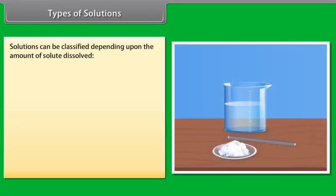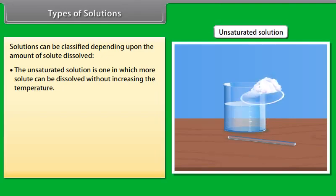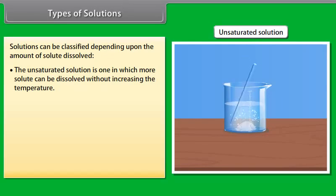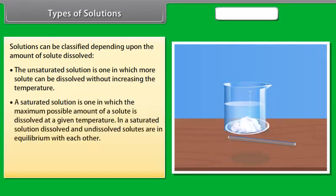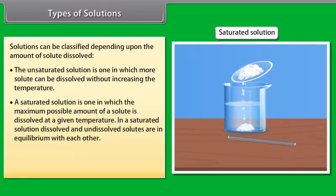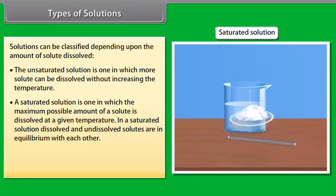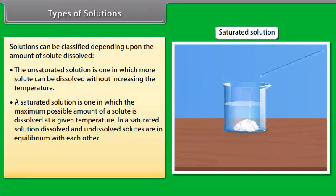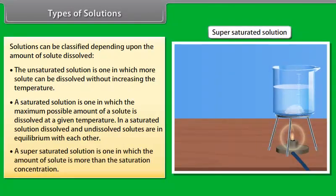Homogeneous mixtures appear to be one substance at the macroscopic level, meaning only one physical state is apparent — only solid, only liquid, etc. Two or more substances are mixed in such a way that it is impossible with the naked eye to distinguish the individual substances. An example is margarine, which is usually made up of at least three substances; however, all the substances mix to produce what looks like one substance.